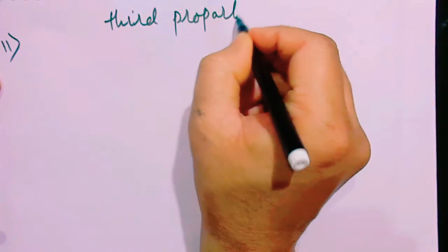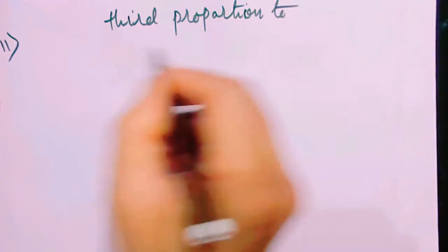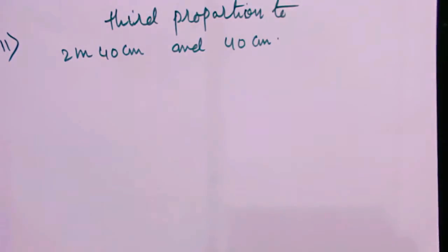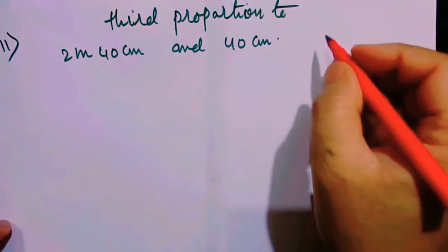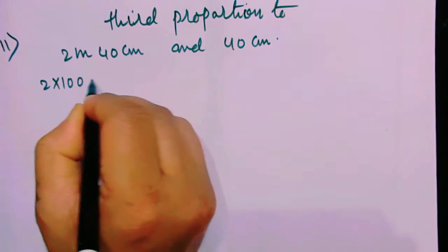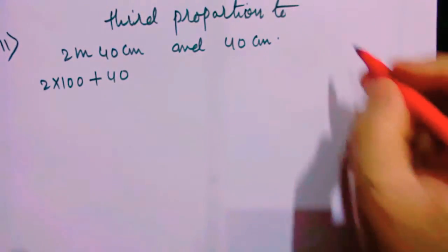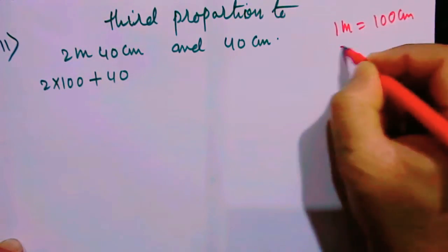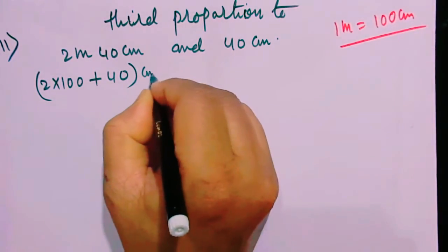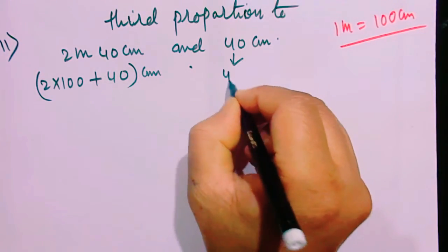I hope this is clear. Solving the sums is not as necessary as understanding the concept. Again, you are asked to find the third proportion of 2 meter 40 centimeter and 40 centimeter. Let the third proportion be x. Now, 2 meter 40 centimeter equals 2 times 100 plus 40, because 1 meter equals 100 centimeter. Therefore, 2 meter will equal 200 centimeter plus 40 centimeter, giving 240 centimeter. This 40 centimeter is already in centimeters.